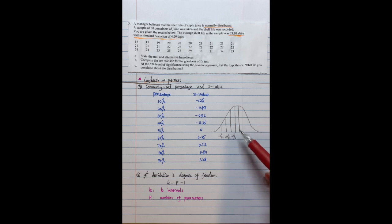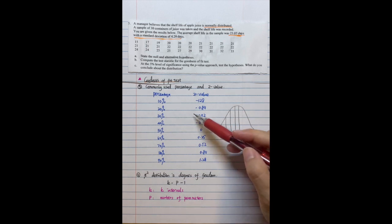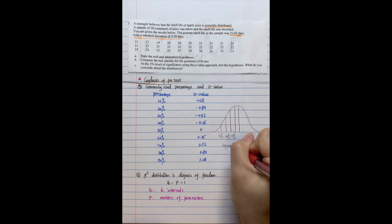So this is some commonly used percentage and the corresponding Z-value showing here. So with this type of percentage, like equal probability, equal probability intervals.